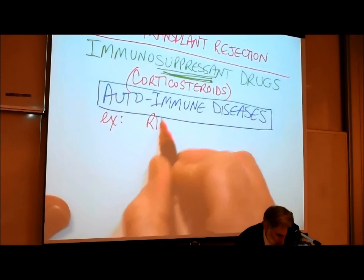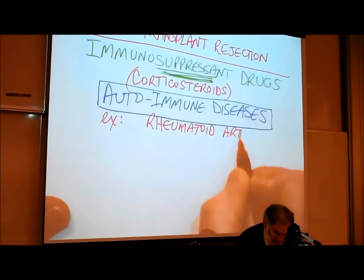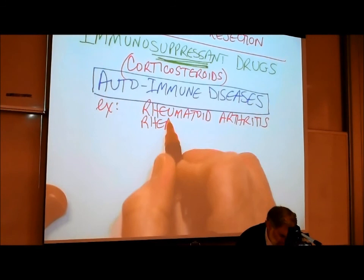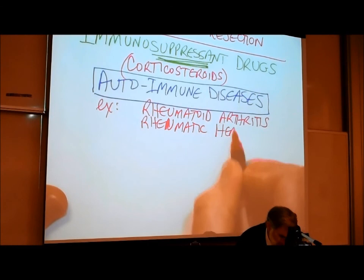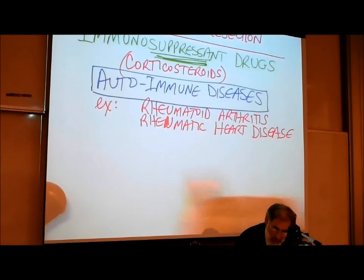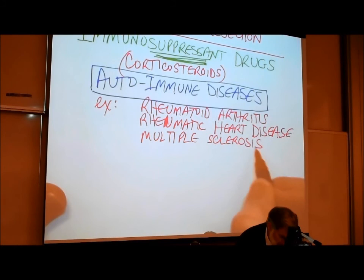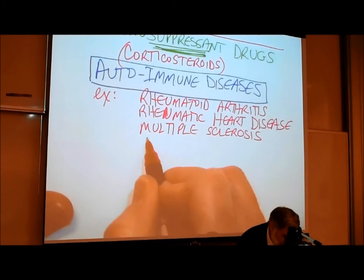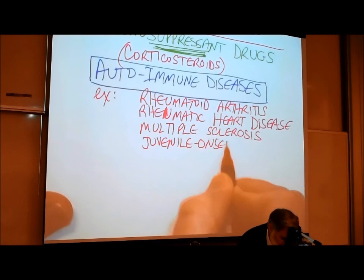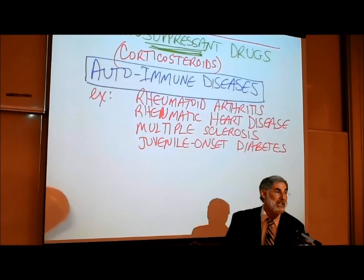Examples of autoimmune diseases: Rheumatoid arthritis — where the immune system attacks the joints. Rheumatic heart disease — where the immune system attacks the heart. Multiple sclerosis, or MS — where the immune system attacks the nervous system. Juvenile onset diabetes — where the immune system attacks the pancreas that makes insulin. There are many others, including ulcerative colitis, Crohn's disease, Graves' disease, Hashimoto's disease, and lupus erythematosus.